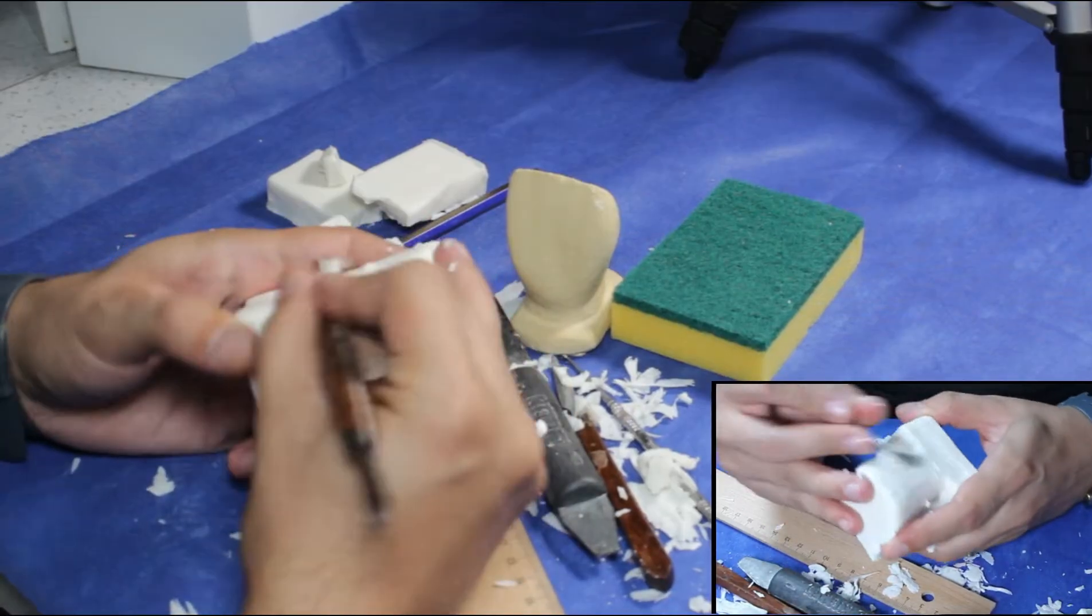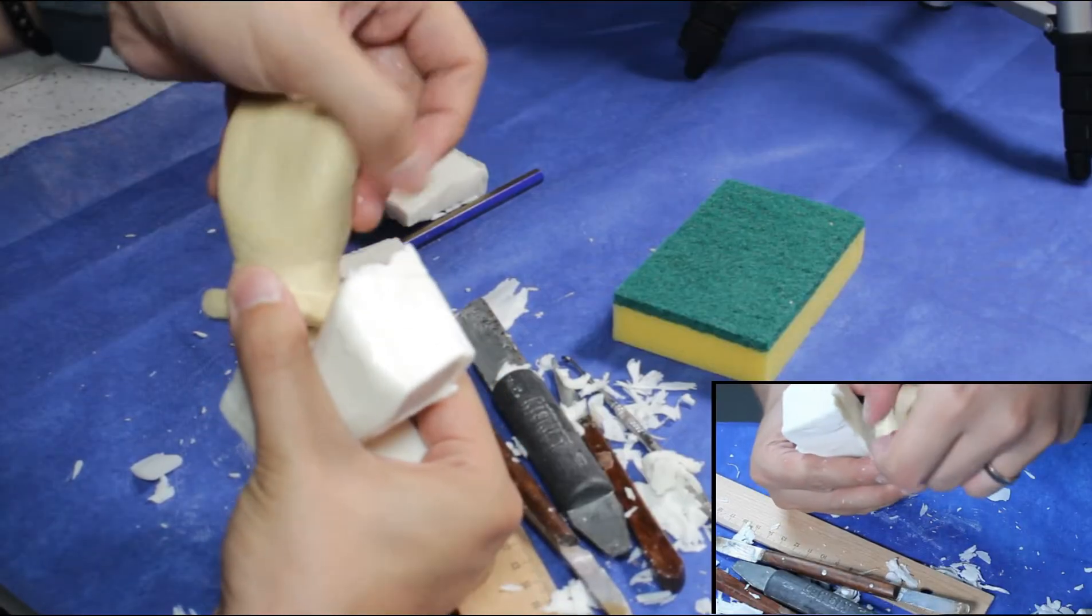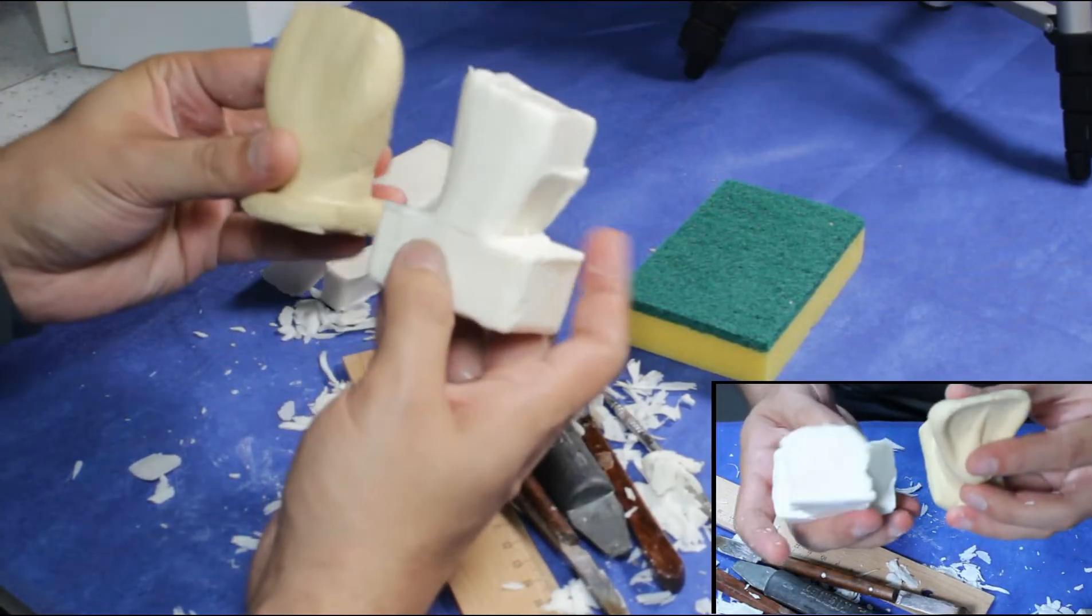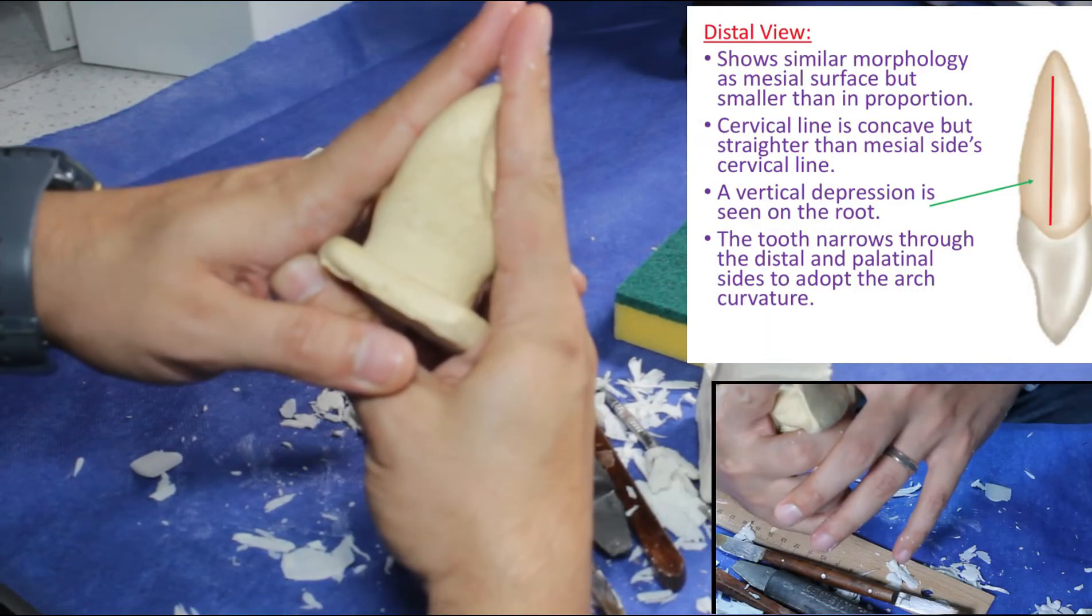We have talked about carving a tooth is a three-dimensional task. So we have finished the first dimension labial mainly. The second dimension is distal surface. When we look from distal aspect, we see a triangle.